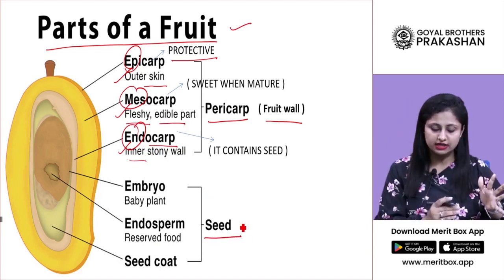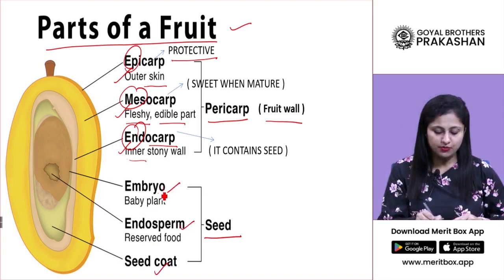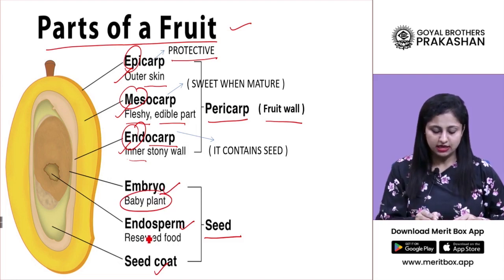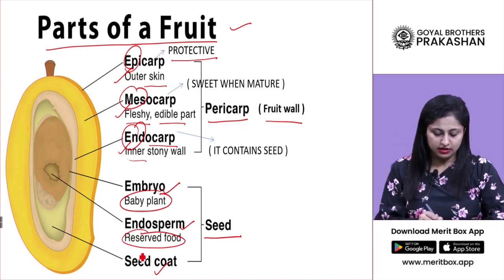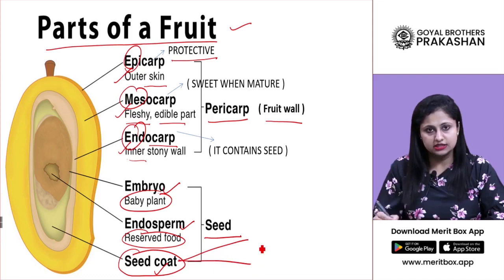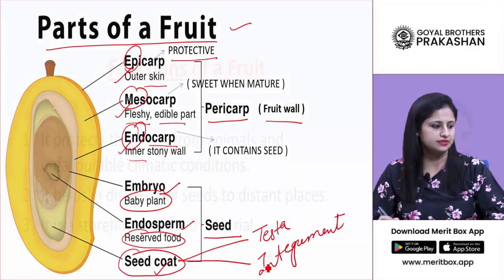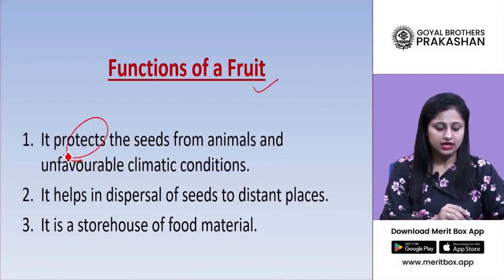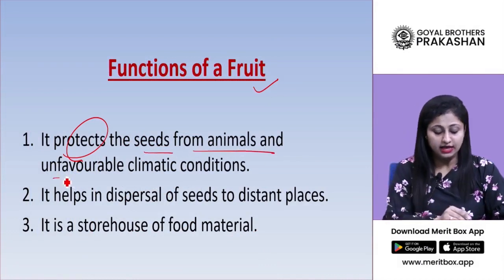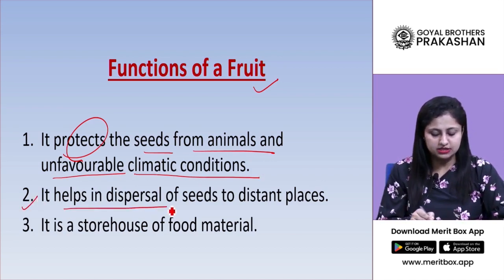The seed is divided into embryo, endosperm, and seed coat. The embryo later forms the baby plant. Endosperm contains reserved food for the developing embryo. The seed coat is divided into testa and integument. Functions of a fruit include: protection of the seed from animals and unfavorable climatic conditions, and helping in seed dispersal.